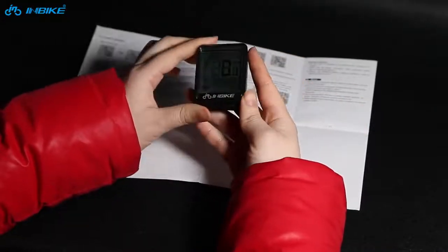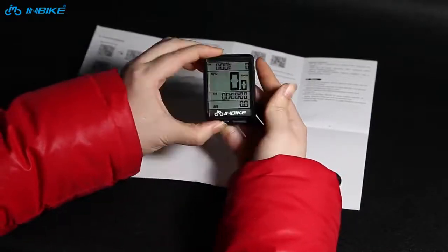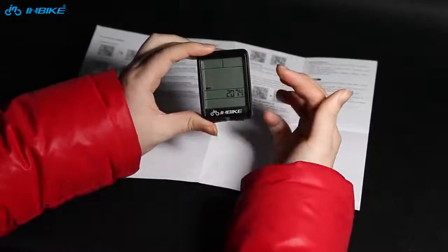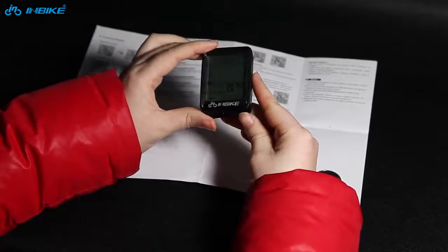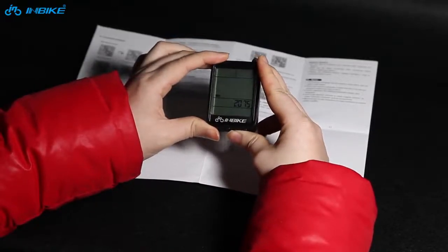The second way is to press the left key for two seconds, and then you'll enter the setting mode. Press the right key to adjust the numerical value.